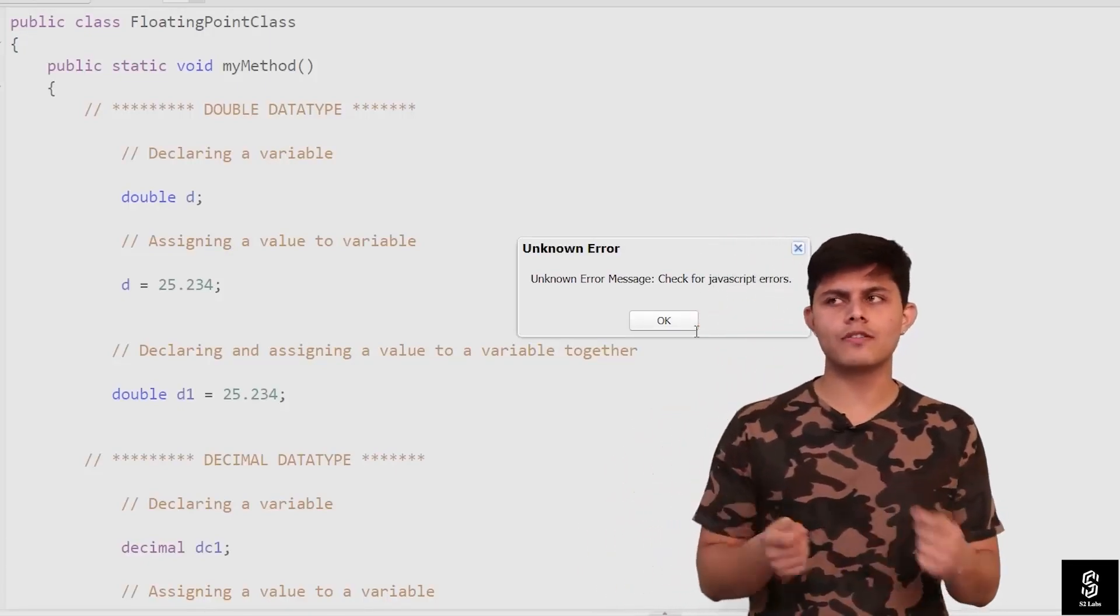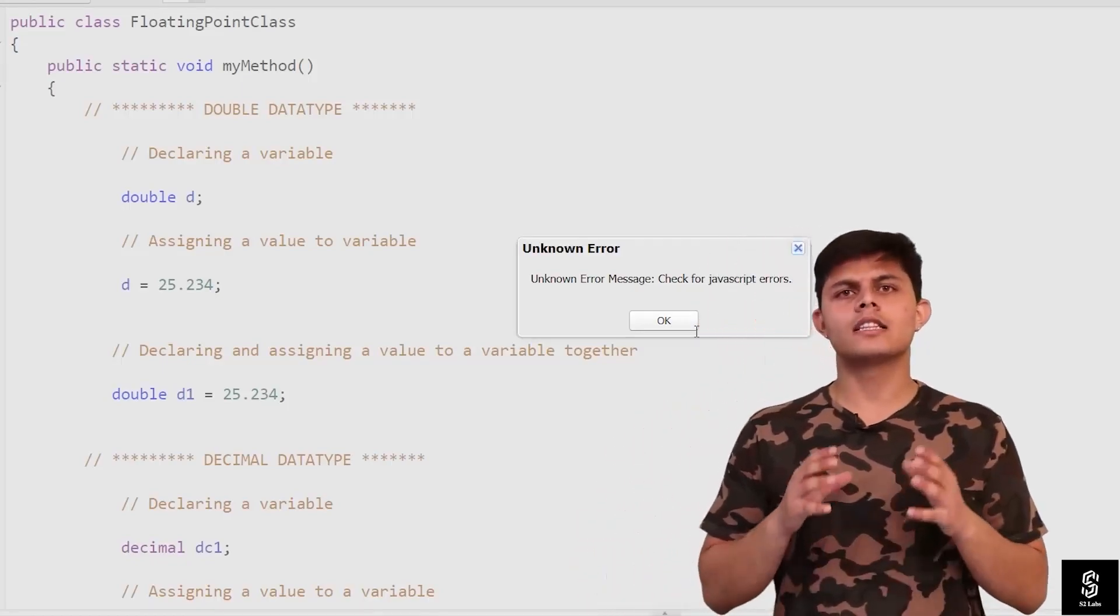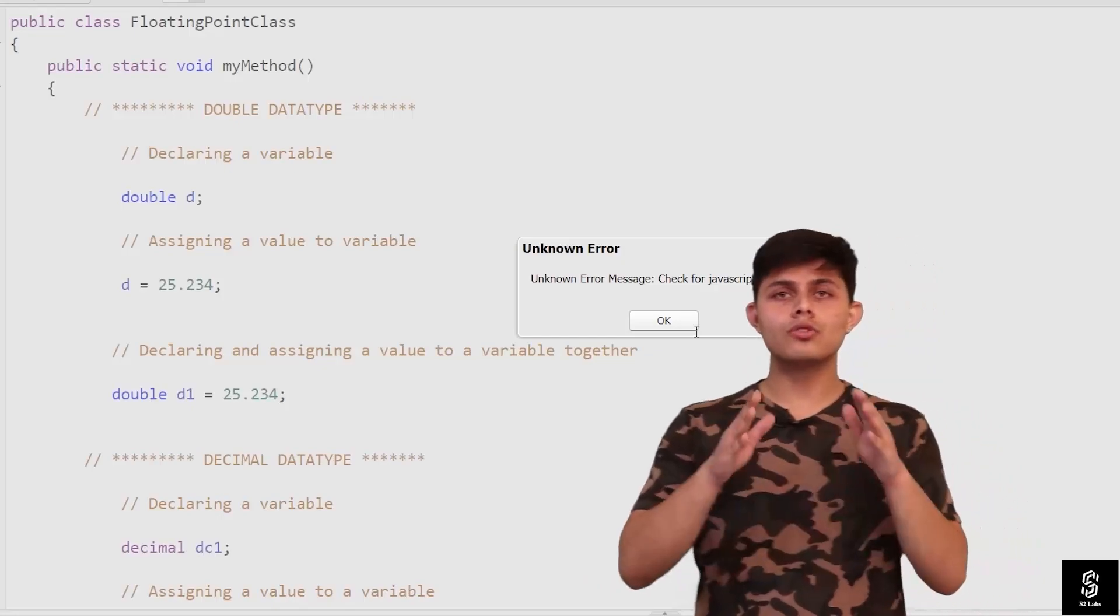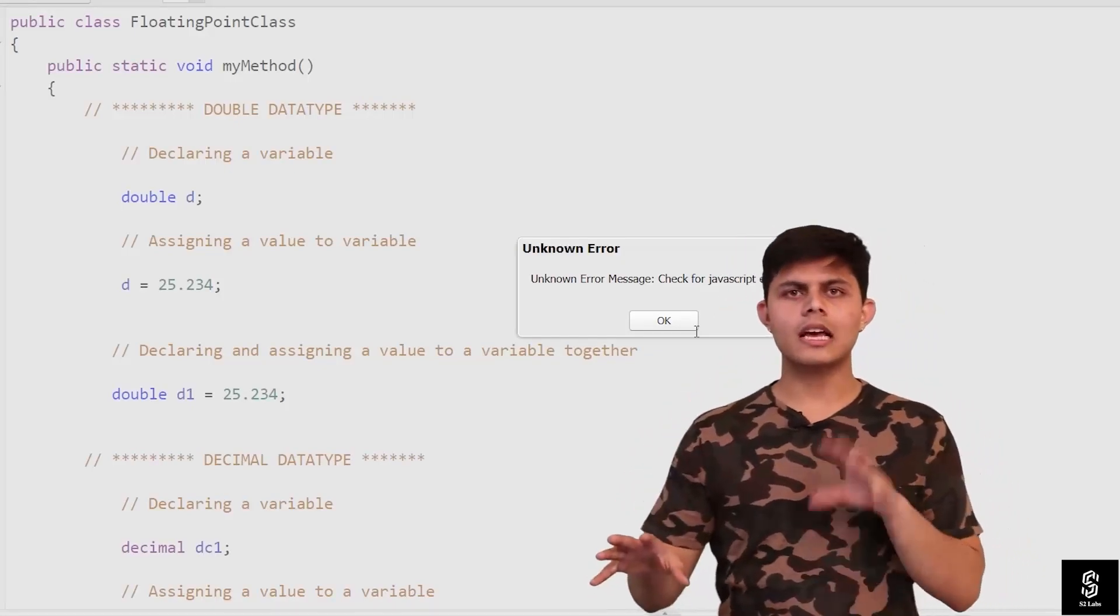If you want to store a value like 3.14153 something like that, then we're going to use floating point data types. Floating point data types are divided into two subtypes: one double and the other one is decimal.